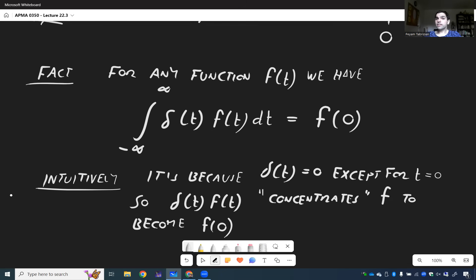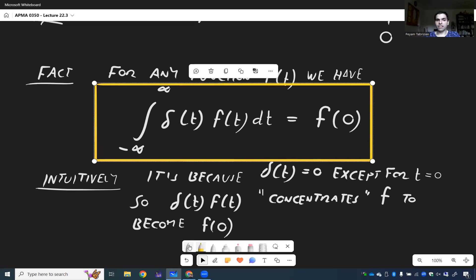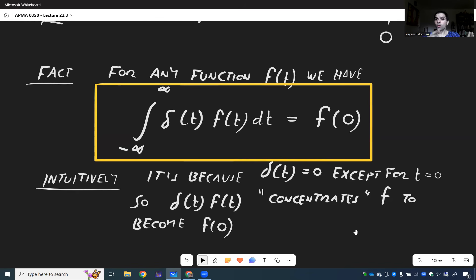And in fact, by the way, this is sometimes the definition of the Dirac delta in advanced math. It's just this weird tool that if you multiply with a function and you integrate it, it gives you the value at zero. And by the way, if you're curious about the proof, in the lecture notes, at the end, there's an appendix actually proving this from the construction that we gave before. But here, we just take it as a given. And in particular,